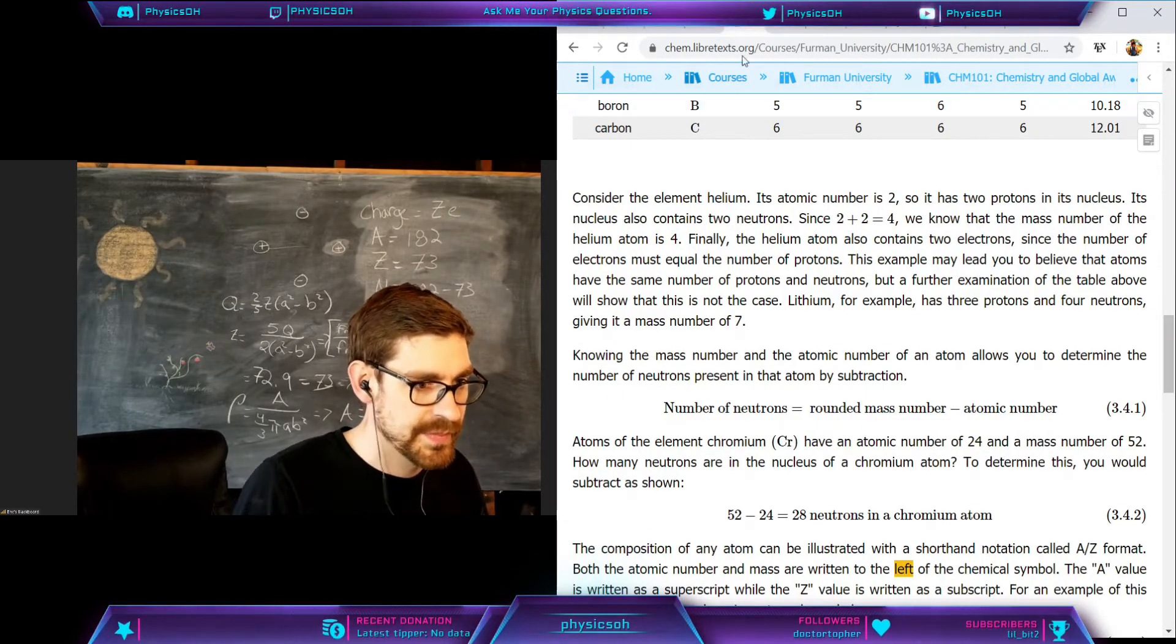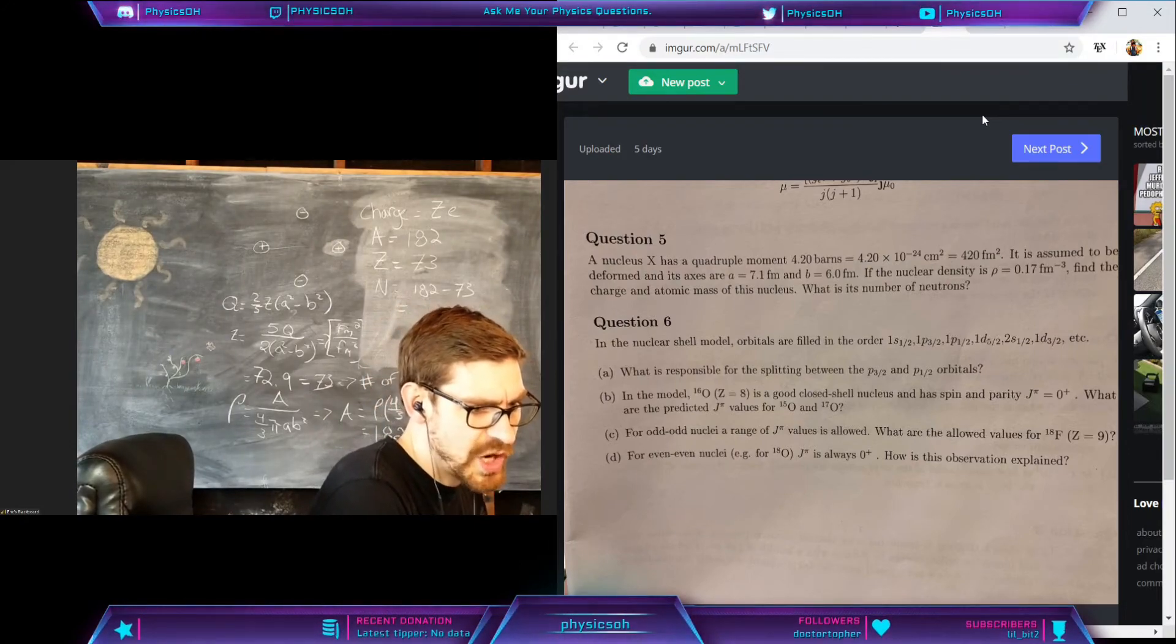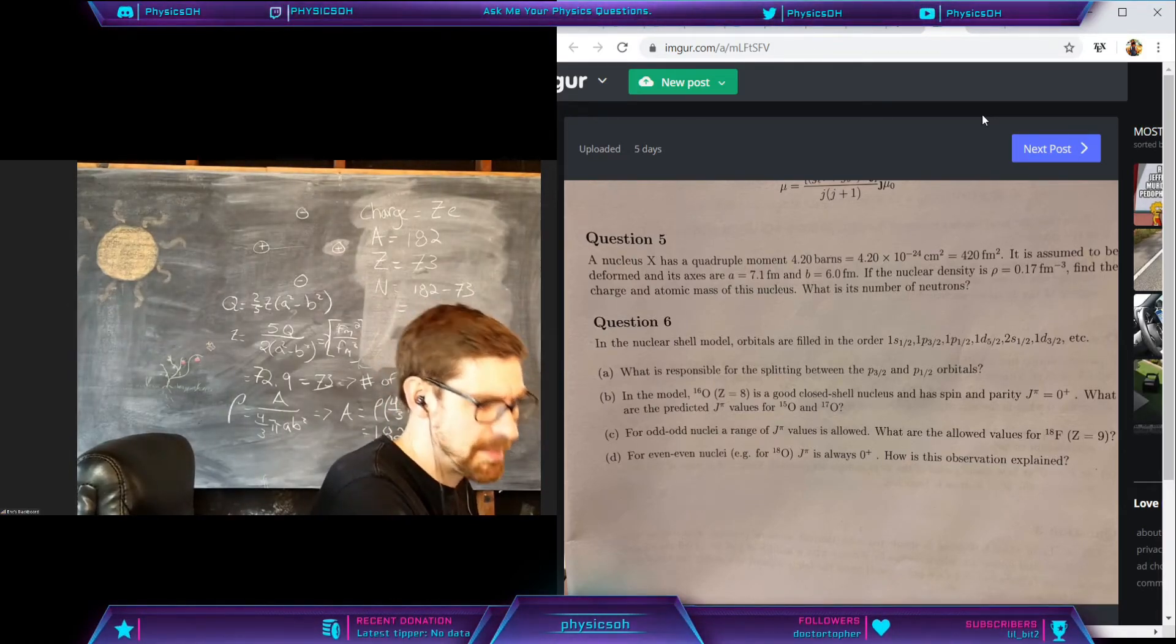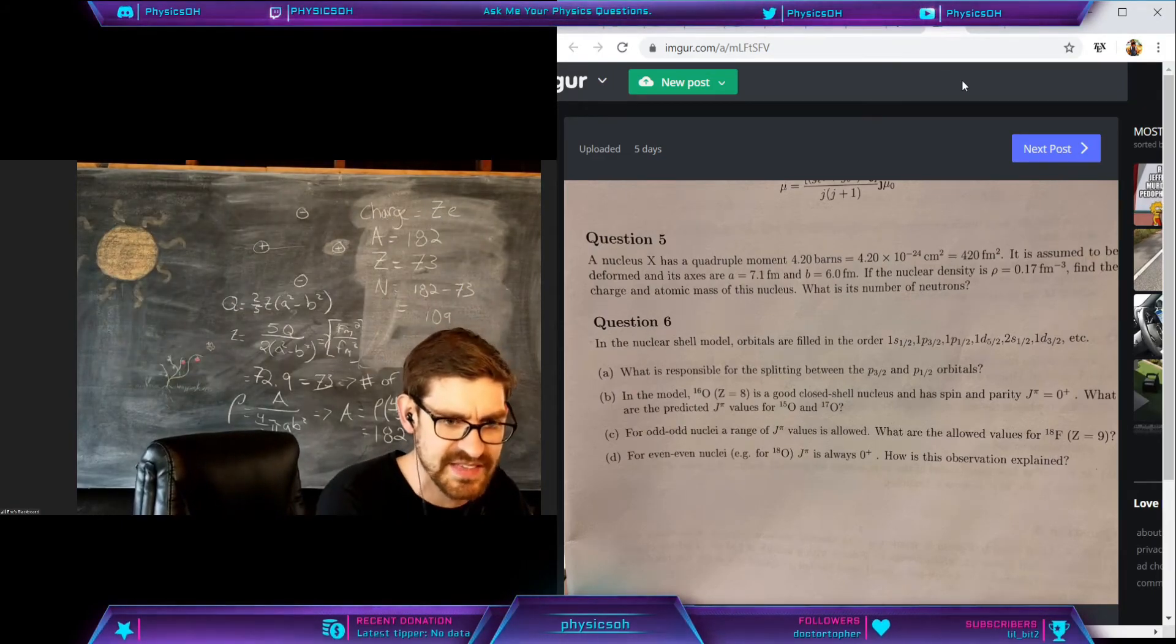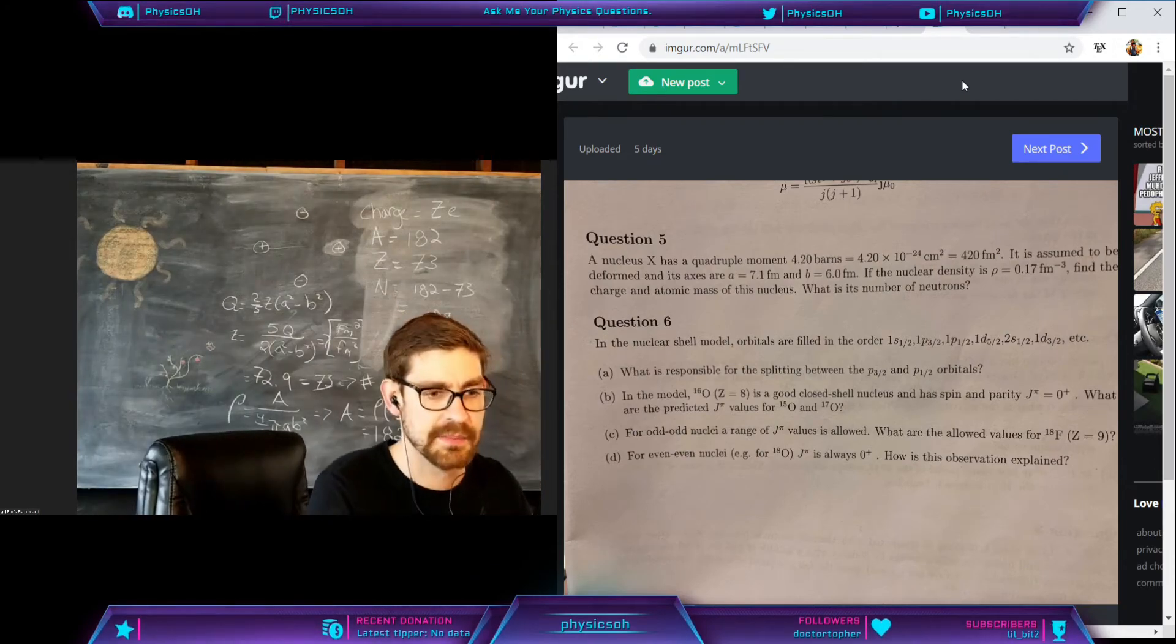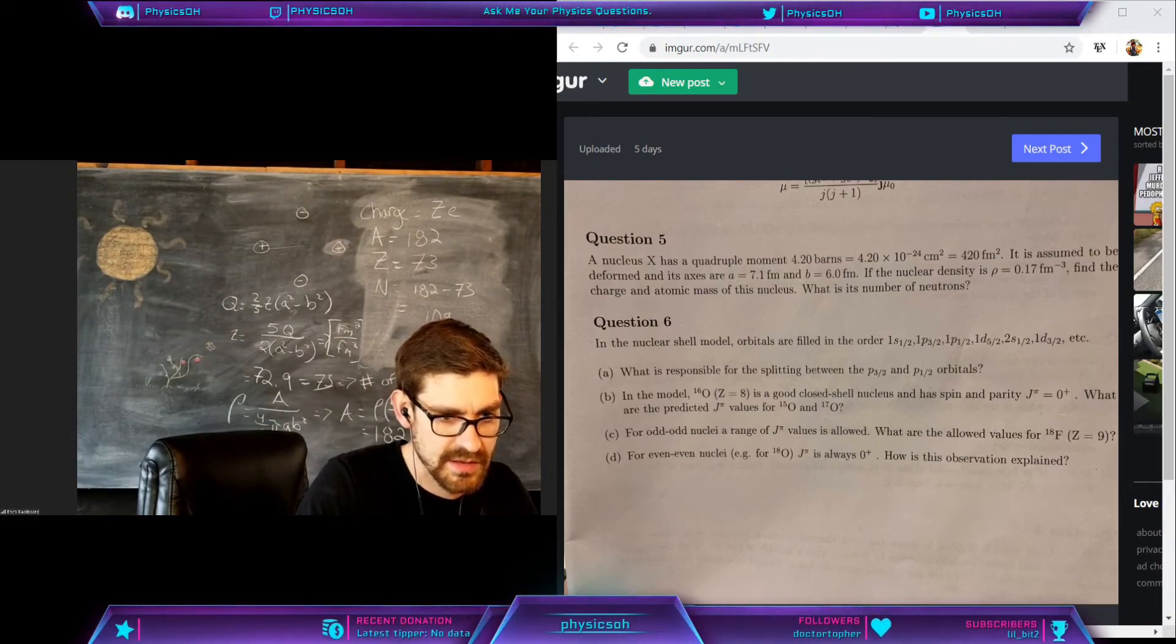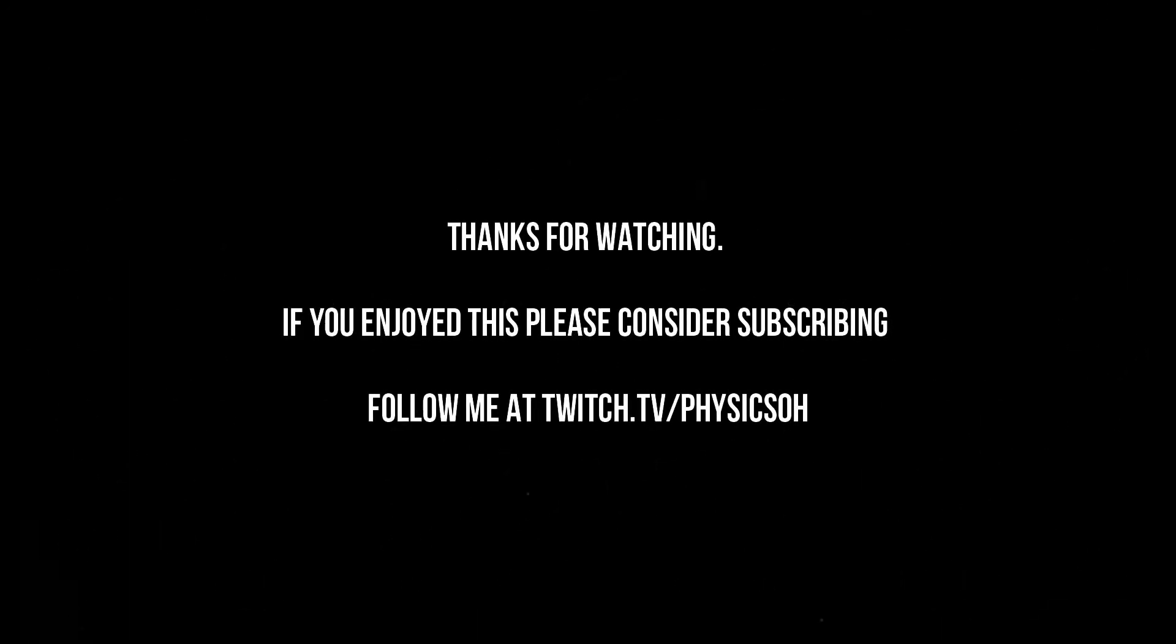So the neutrons are 109. Let's double check and look at this problem again here. So the charge and the atomic mass. The atomic mass should be 182, right? Or that's the mass number. The atomic mass and the charge, that's the thing that I didn't understand. Aren't they the same thing? Aren't the atomic mass and the charge both given by Z times e? Oh, I don't know, that is beyond me.